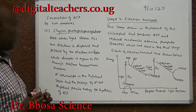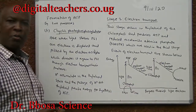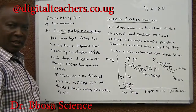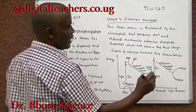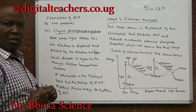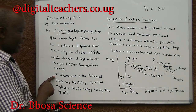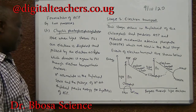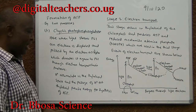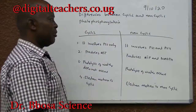Cyclic photophosphorylation: here, when light strikes chlorophyll in PS1, an electron is displaced and taken up by an electron acceptor. It is then donated back to PS1 through electron transport chain proteins. In the process, hydrogen ions accumulate in the thylakoid space, and the passage of hydrogen ions out of the thylakoid provides energy for the synthesis of ATP.